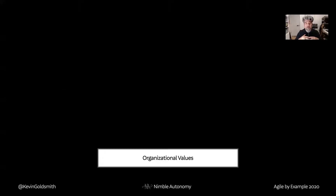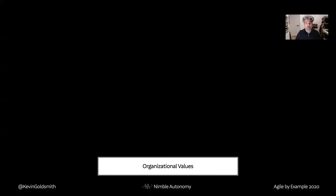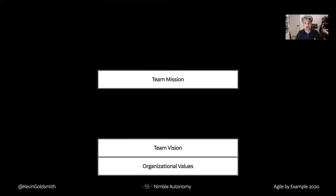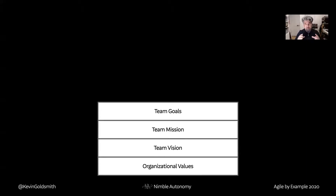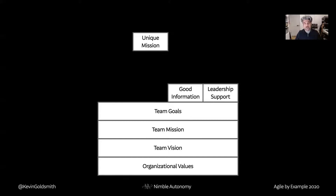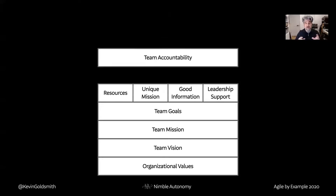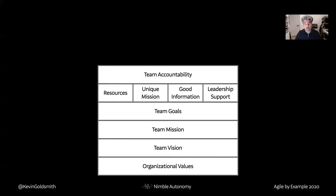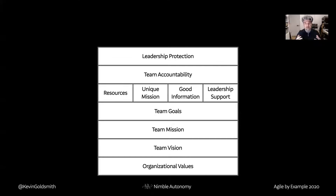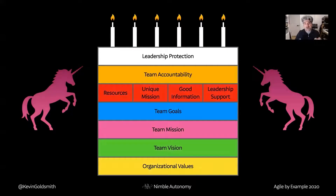This is essentially building a framework, a structure that builds upon itself. As I talked about: the organizational values, the team vision, the team mission, the team goals — these things create a foundation that gives a lot of what the team needs to make good decisions. Then it needs to be able to execute upon them, which requires leadership support, good information, having a unique mission so they're not conflicting with other teams, and resources to achieve their mission. Those things in place mean the team can be accountable to their goals and mission, which means they can now get leadership protection to let them execute without interference. And if you have all these things in place, then you have what I'm going to call the layer cake of autonomy.